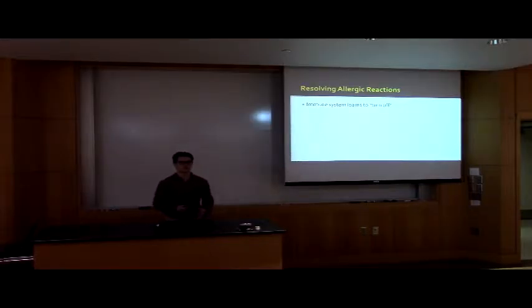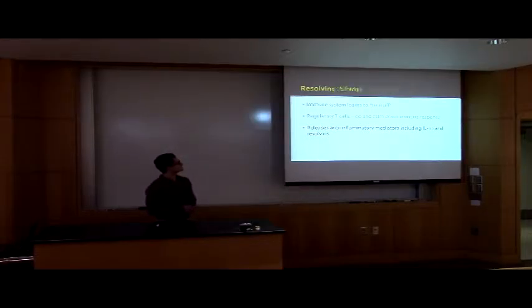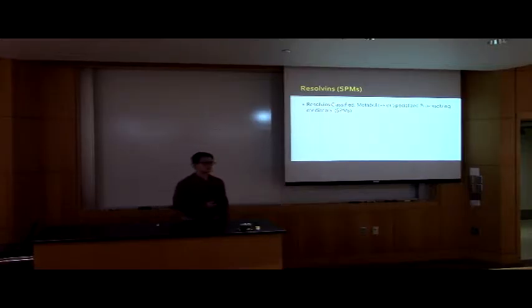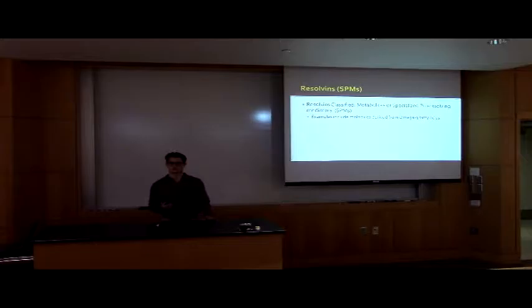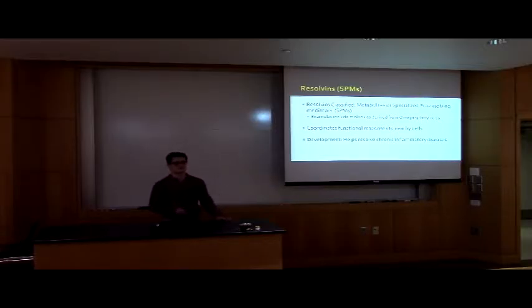Resolving allergic reactions. Your immune system learns to turn off, almost, and what I mean by that is your regulatory T cells go and calm down your immune response. This is through the release of anti-inflammatory mediators, including interleukin-10 and resolvins, and we're going to be touching on resolvins today. Resolvins are SPMs, classified as metabolites or specialized pro-resolving mediators. A good example of these are molecules that can be derived from omega-3 fatty acids. Basically what they do is they coordinate functional responses to nearby cells, ultimately sending out anti-inflammatory signals to those tissue cells. This development of resolvins helps resolve chronic inflammatory diseases, such as asthma, through the depletion of B cell, or B cell IgE production.